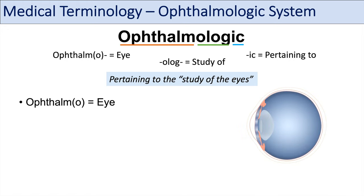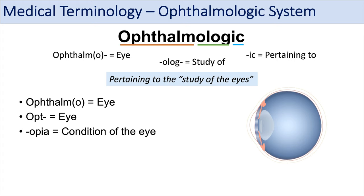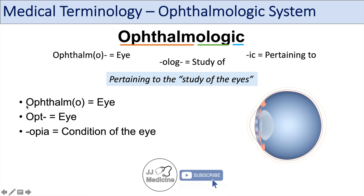We know that the prefix ophthalm or ophthalmo means eye — you can think of ophthalmologist. But we can also see that the prefix opt also means eye, and you can think of words like optic or optometrist. And then the suffix opia — they all have something to do with the eye.